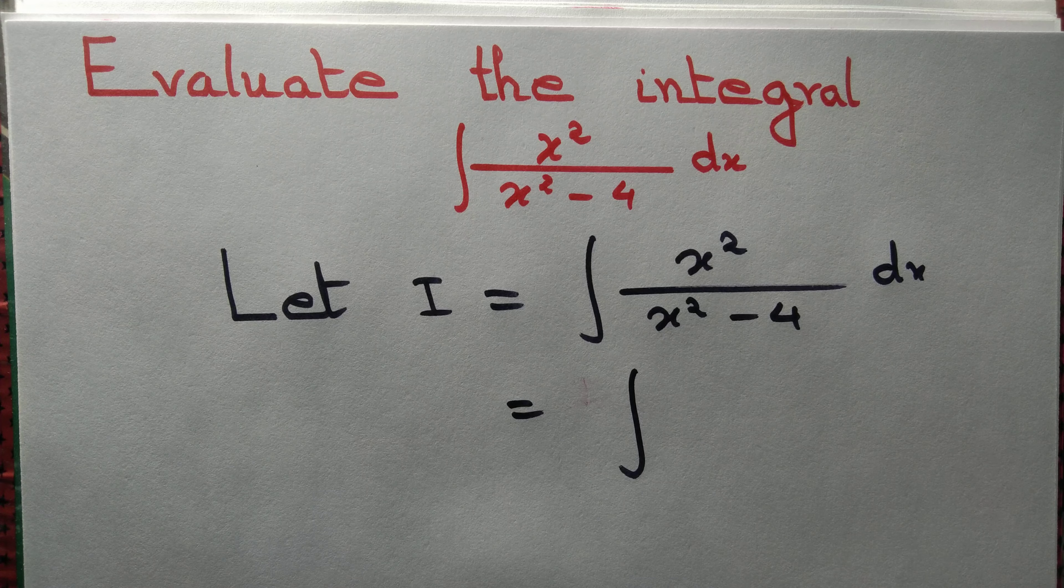Let's add 4 and minus 4 to the numerator: x square minus 4 plus 4. Are we maintaining the equality? The answer is yes. Denominator we copy as it is.